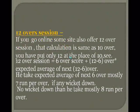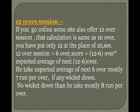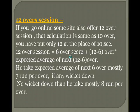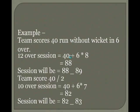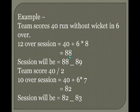If 12-over session — some sites also offer a 12-over session online. That calculation is the same as 10-over; we just put 12 in place of 10. Formula: 12-over session equals 6-over score plus (12 minus 6) multiplied by expected average of next 6 overs — mostly 8 runs per over. Example: team scores 40 without wicket in 6 overs — 12-over session equals 40 plus 6 multiplied by 8 equals 88, offered at 88-89.